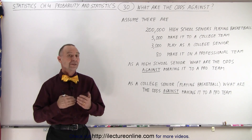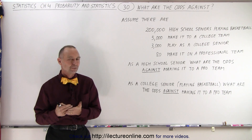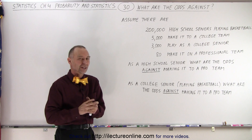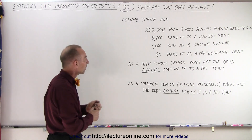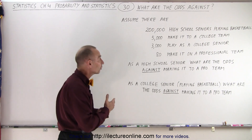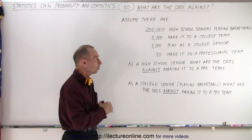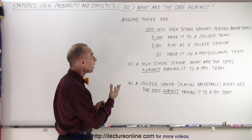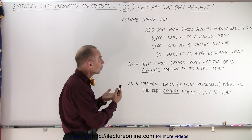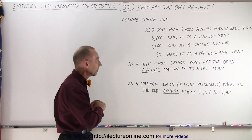Welcome to our lecture online. Now let's explore the concept of the odds against. To do that, let's look at some hypothetical numbers — they're probably fairly representative. Let's assume that in the country there are 200,000 high school seniors playing basketball. Of those, 5,000 make it to a college team, and of those 5,000, about 3,000 will play as a college senior.